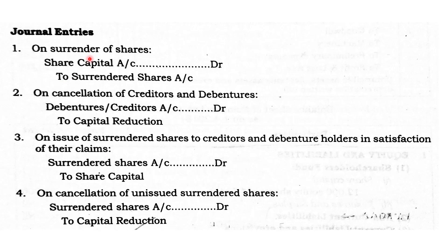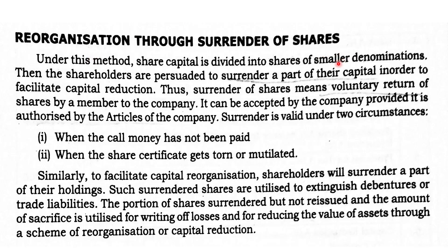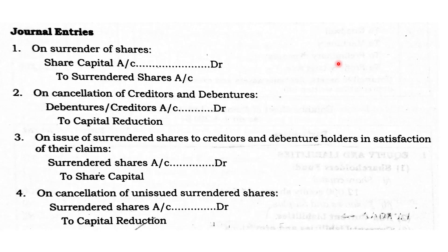There are three general entries for surrender of shares and capital reduction. First, the share capital subdivision entry: old equity share capital is converted to new equity share capital with a smaller denomination. Second, the surrender entry: share capital account is debited and surrendered shares account is credited. The amount surrendered is recorded. Next, we consider the creditors.